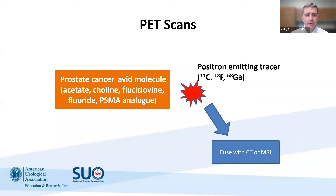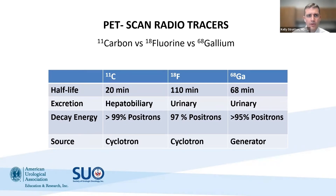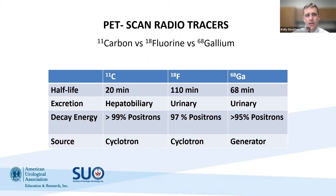In PET imaging, we use a positron-emitting tracer—like choline, F18, or gallium—linked to a molecule that is prostate cancer-avid, such as acetate, choline, fluciclovine, or a PSMA analog. These components are brought together and imaged within a CT scanner or in some places an MRI. Each radio tracer has different characteristics: choline is not excreted in the urinary tract but has a very short half-life, so it needs to be produced in a cyclotron and imaged nearby. F18 does have urinary excretion but has a longer half-life, making it easier to use. Gallium also has a longer half-life.